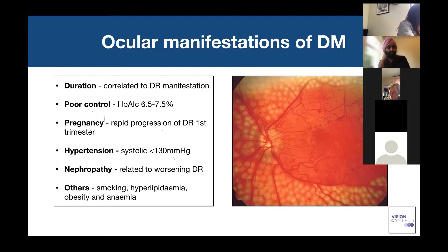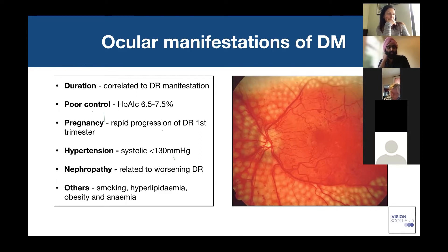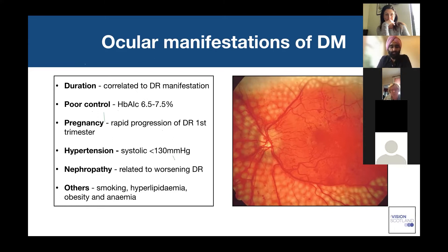If you have type 1 or type 2 diabetes, you want your HbA1c — a measure of general control — between 6.5 and 7.5%. This is something your GP should be monitoring closely at your diabetic review. Pregnancy is also an important risk factor.